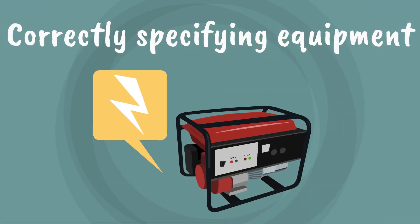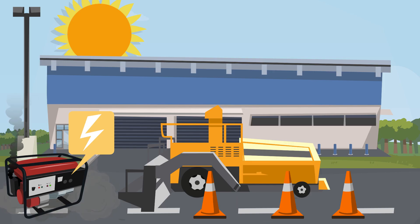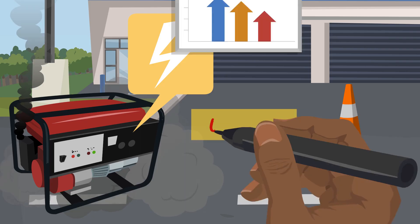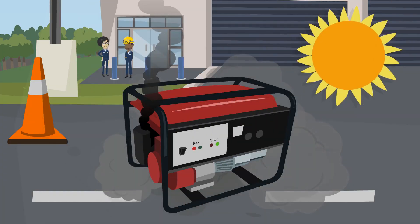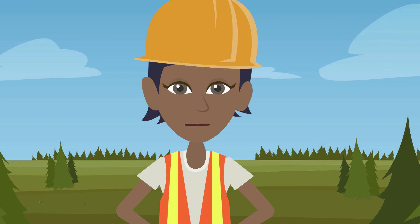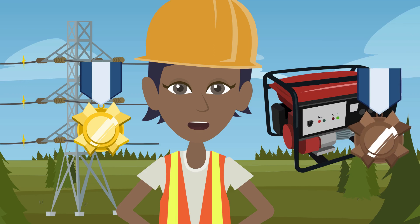Correctly specifying equipment is important. One of the biggest sources of air pollution on construction sites are diesel generators, which are quite often oversized and left running 24/7 with little load, causing significant emissions. You can reduce emissions by more accurately specifying a generator to your power needs. You could use a hybrid gas or solar generator, plan ahead for early electrification, and prioritise using grid electricity, specifying diesel power generation only as a last resort.